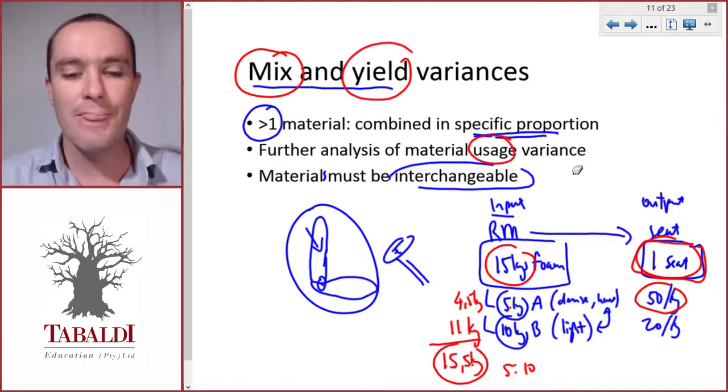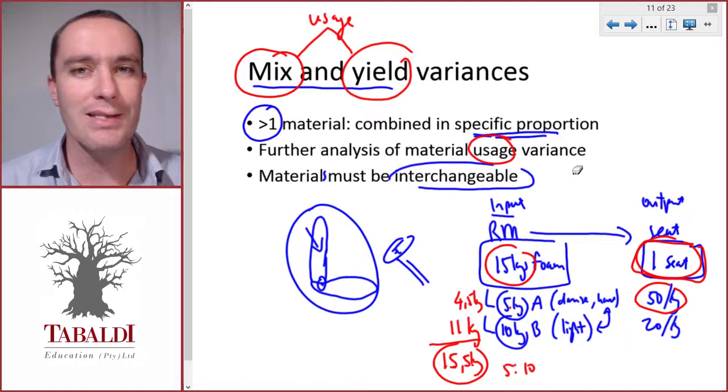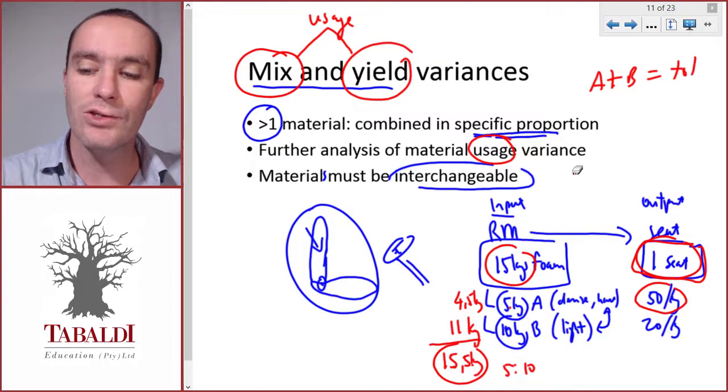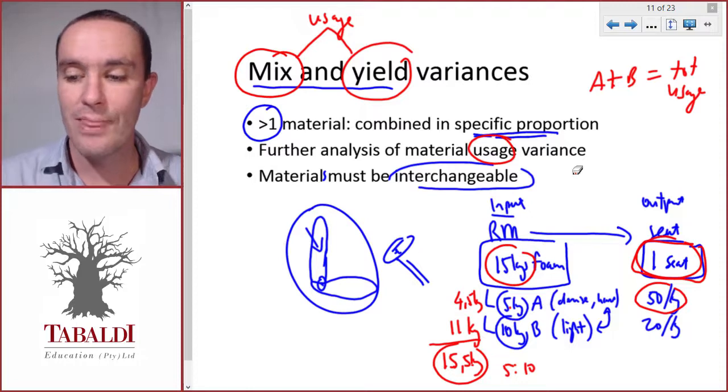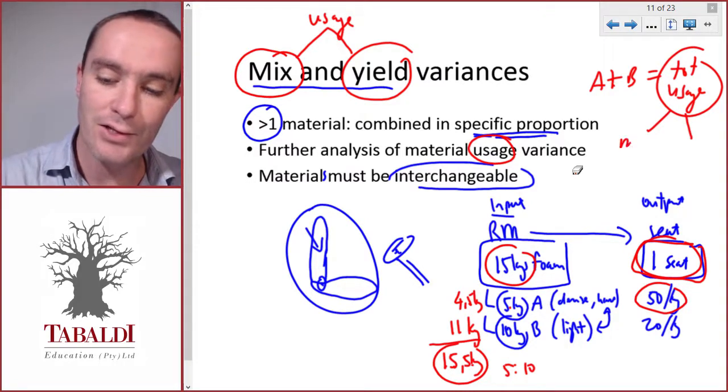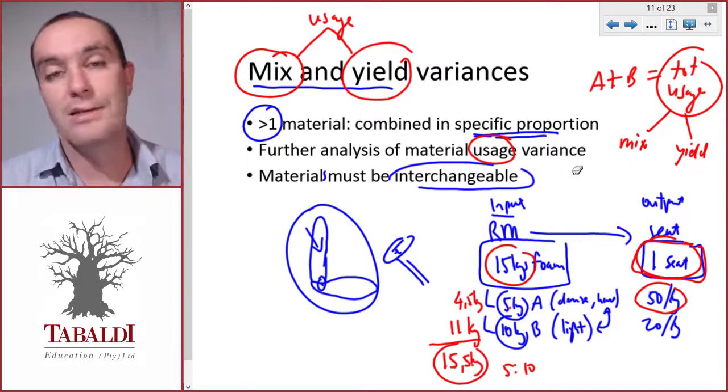We used more than we should have, and this mix and yield variance is simply a split of our usage variance. Remember our usage variance from standard costing for materials? If we take the usage variance of foam type A and foam type B, we get the total usage variance. We can split this further into a mix and a yield variance.